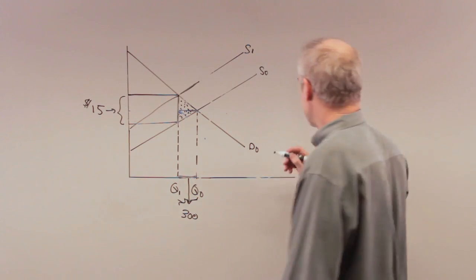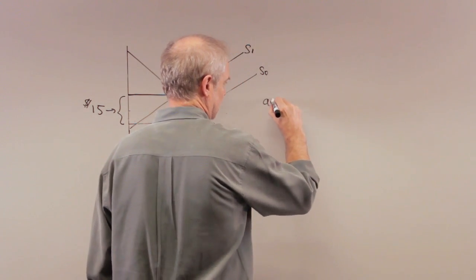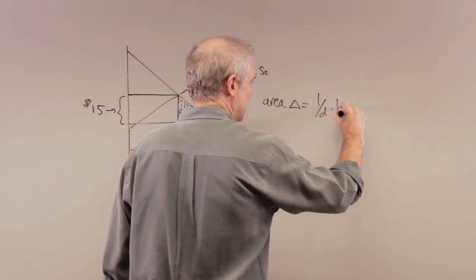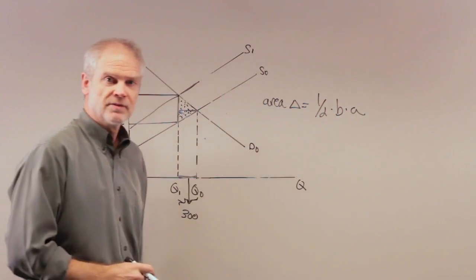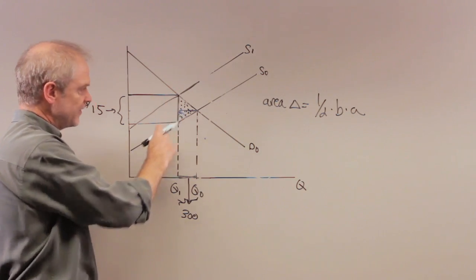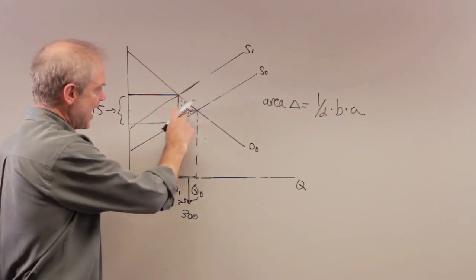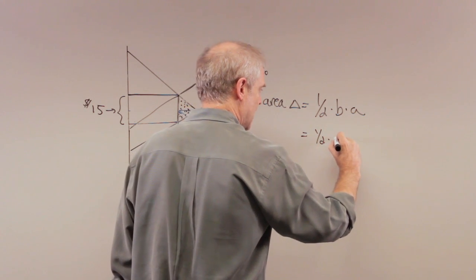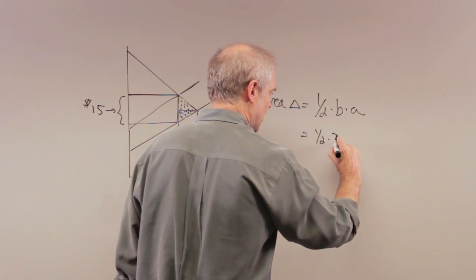Therefore, we know the area of a triangle is equal to 1 half base times altitude. So therefore, I have the altitude. I have the base. So in this case, it's equal to 1 half times 15 times 300.